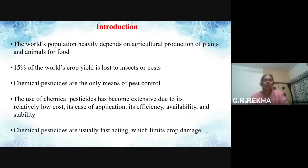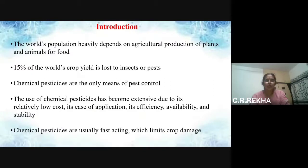So what is biopesticide? Let us study a brief introduction. As you all know, the world's population heavily depends on agricultural production of plants and animals for food. So 15% of the world's crop yield is lost to insects or pests. Chemical pesticides are the only means of pest control. The use of chemical pesticides has become extensive due to its relatively low cost, ease of application, efficiency, availability, and stability. Chemical pesticides are usually fast acting, which limits the crop damage.